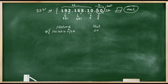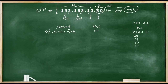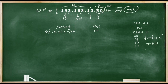Before understanding the host part, a simple question: how many states or permutations can be formed with a single bit? The answer is two, because a bit can take only two values: zero or one. With two bits, the answer is four. You can figure out the formula: two to the power n, where n is the number of bits. So with three bits, the answer is two to the power three, or eight.